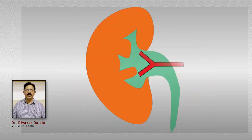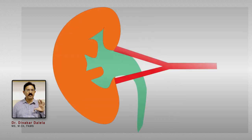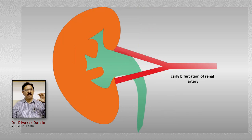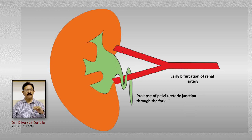There is one more situation: an episodic rise in the pelvicalyceal pressure. Normally the renal artery divides into two branches behind the renal pelvis. In some patients, the renal artery divides a little early — the fork formation is a little early — and the junction of the pelvis and ureter tends to lie between the fork. There are situations when this junction of the pelvis and upper ureter prolapses outwards through this fork, and when the prolapse happens there occurs kinking in the ureter over the vessel, and this kinking will lead to obstruction to the renal pelvis outlet.